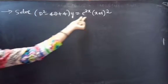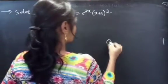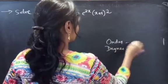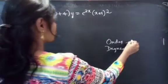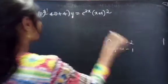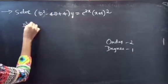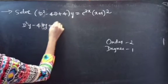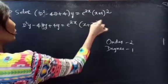The problem to solve is: D squared minus 4D plus 4 into Y equals 3 power 2X into X plus 1 whole square. Let's find the order and degree of the given differential equation. We can write the given differential equation as D squared Y minus 4DY plus 4Y equals E power 2X into X plus 1 whole square.